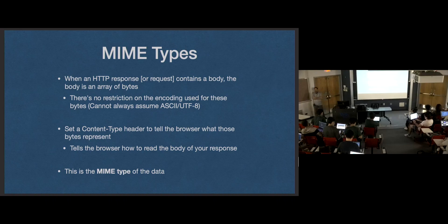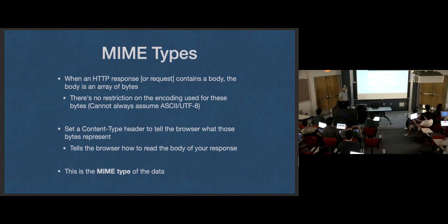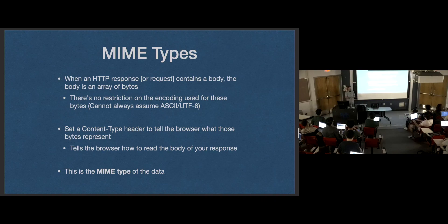Now let's talk about MIME types. We definitely didn't get to this last time. When we send information over the internet, how does the receiver know how to interpret that information? It's just ones and zeros, so how do we actually say what it means? Well, MIME types — that's how we're going to do it. We have a pretty big restriction in that the headers of an HTTP request can only be ASCII, but that doesn't mean we can only send ASCII over the internet. That would be pretty limiting — you know the internet isn't just text.